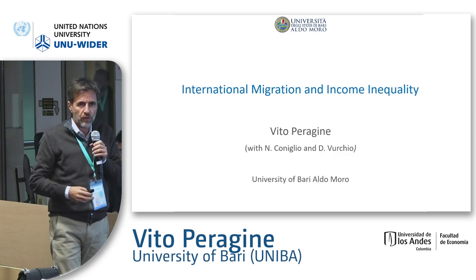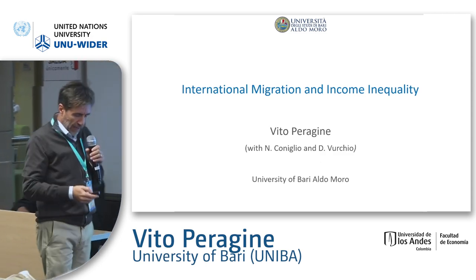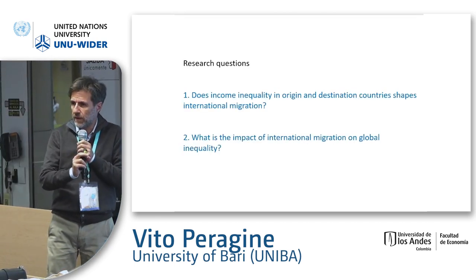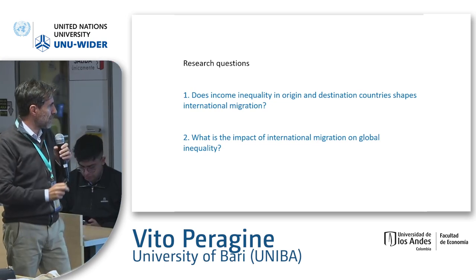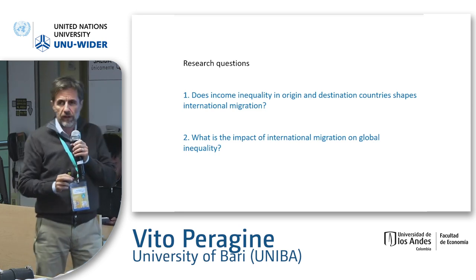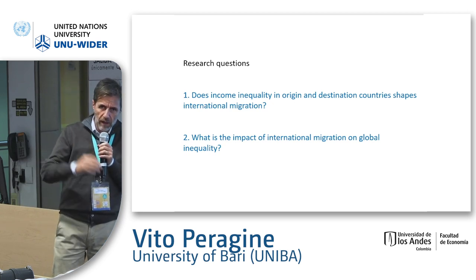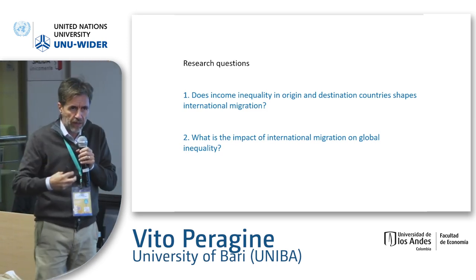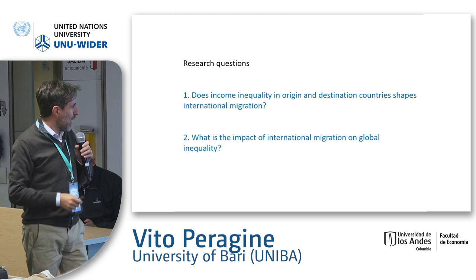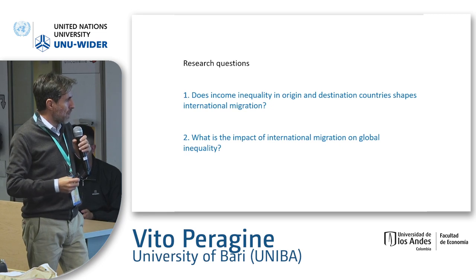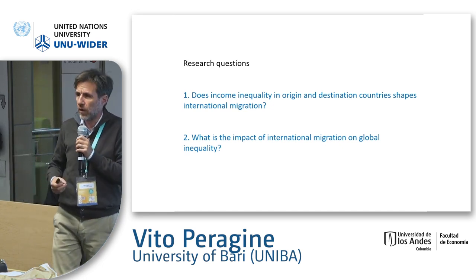We ask some questions and try to answer them through two different empirical exercises. These are the two questions which motivate the paper. The first is: does income inequality in the origin and destination countries shape international migration? Is inequality in the destination and the origin country an important factor in explaining the flows of immigration? And the second question is the other way around: does international immigration substantially affect global inequality?